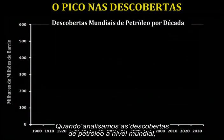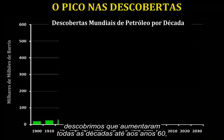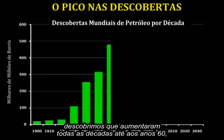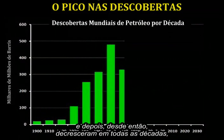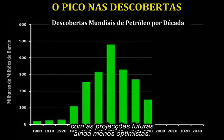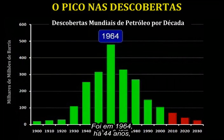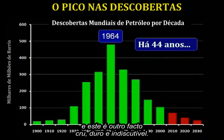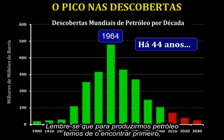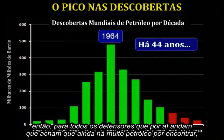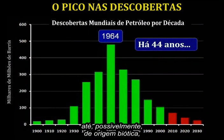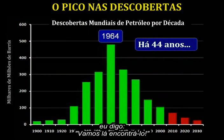When we look at worldwide oil discoveries, we find that those increased in every decade up to the 1960s, and then have decreased in every decade since then, with future projections looking even more grim. The exact peak of discovery was in 1964 — 44 years ago. And that is another cold, hard, indisputable fact. Remember, in order to produce oil, you have to find it first. So to all the advocates out there who hope that lots of oil remains to be found, possibly of an abiotic origin, I say: let's find it.